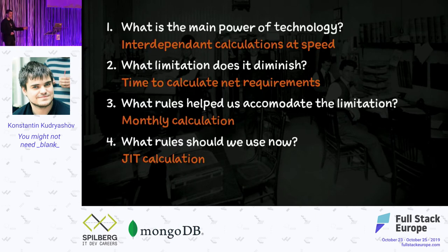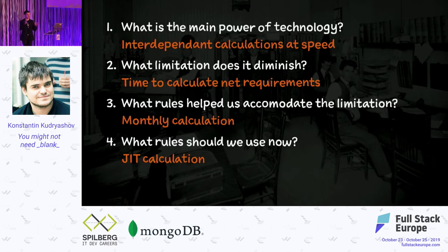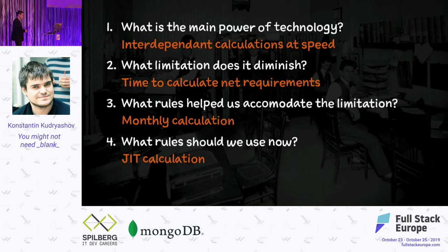The most amazing thing is that if you go back and read about early adoptions, the majority of those 8,000 companies — after implementing MRP — kept running their calculations monthly. They had a process to run net requirements once a month, then installed this very complex software system that could run overnight, but their rules still dictated running it only once a month. The only thing that actually changed was that instead of 20 people, they now had a software system doing the same thing once a month. And in the 70s, that was a hell of an expensive system to run — so a lot of them actually lost money compared to just using 20 people.